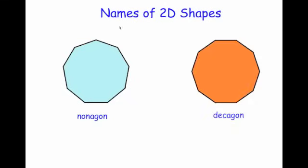And a decagon has got 10 straight sides. So it's 10 straight sides: one, two, three, four, five, six, seven, eight, nine, ten. It's called a decagon.